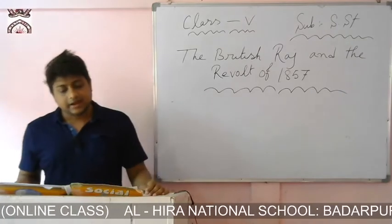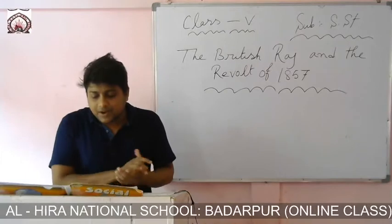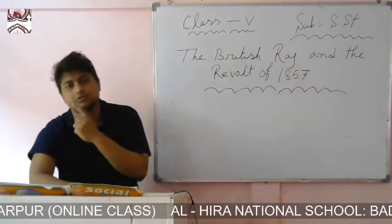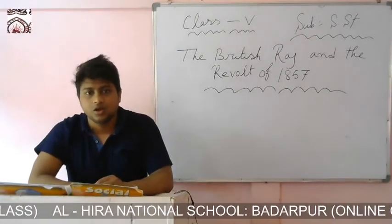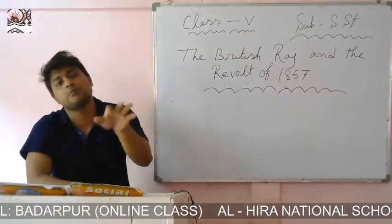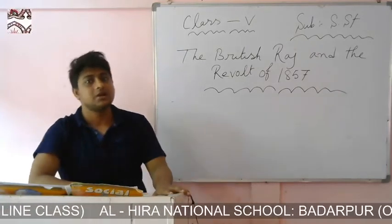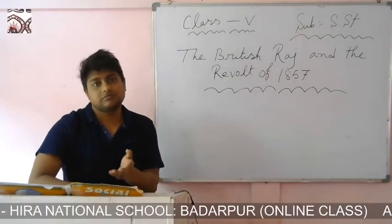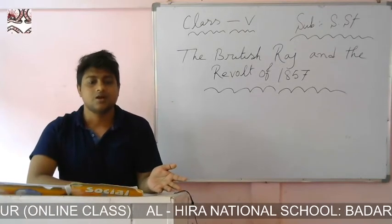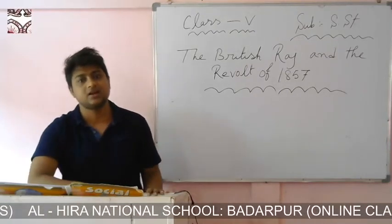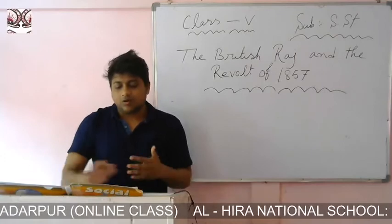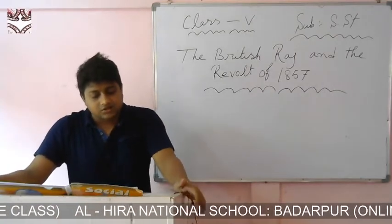India came under the British Crown, but still the conditions of the people did not improve. The British imposed more and more taxes on Indians, and increased them year after year. Crop failures due to natural disasters meant farmers were unable to pay taxes and lost their land.